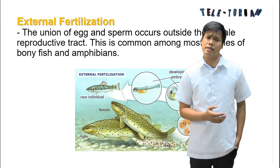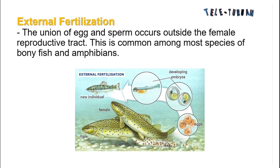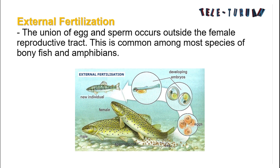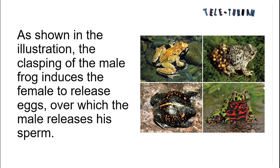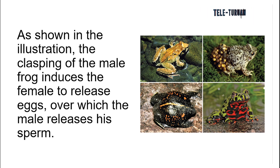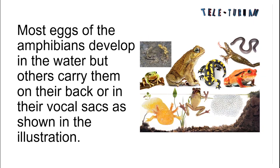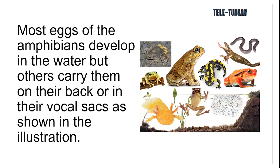In external fertilization, the union of egg and sperm occurs outside the female reproductive tract. This is common among most species of bony fish and amphibians. As shown in the illustration, the clasping of the male frog induces the female to release eggs, over which the male will release his sperm cells. Most eggs of amphibians develop in water, but some carry them on their back or in their vocal sac, as shown in the illustrations.